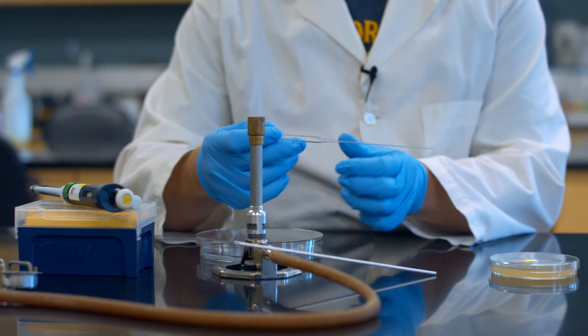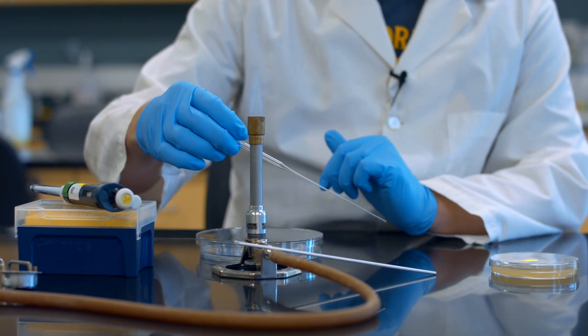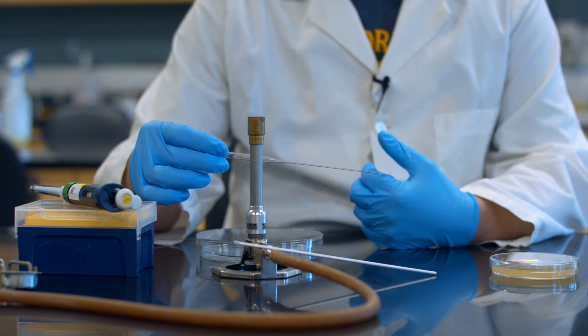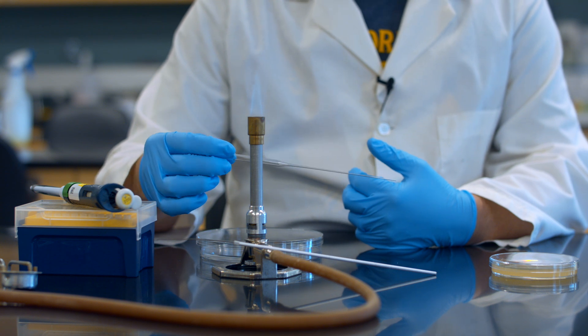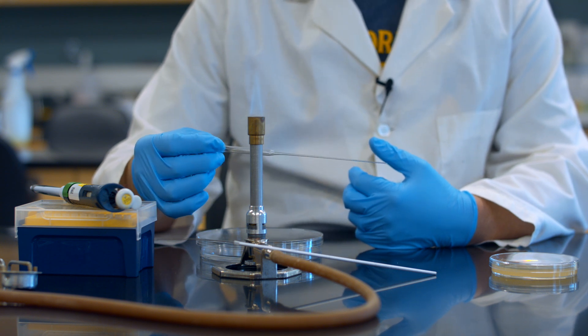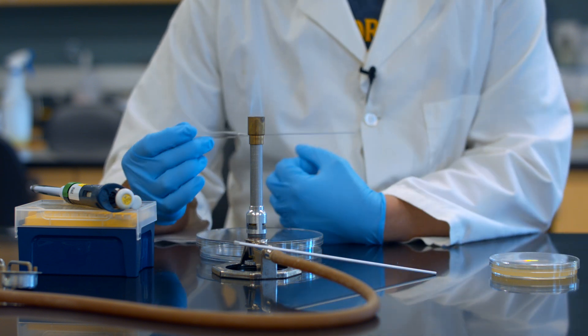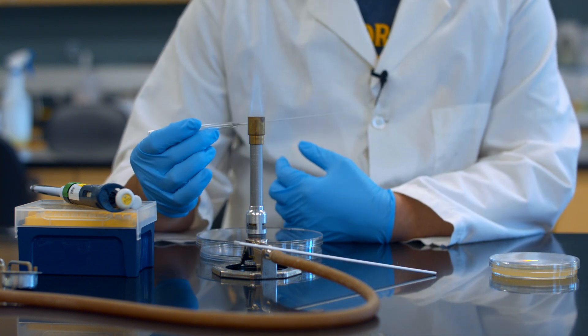Now the spreader we're going to make from a piece of glass. You can buy plastic spreaders, you can make heavy glass spreaders that you can keep around for a long time. I find that using these glass Pasteur pipettes is the most effective way to create a spreader. So the first thing I want to do is teach you how to make a glass spreader with a Pasteur pipette.